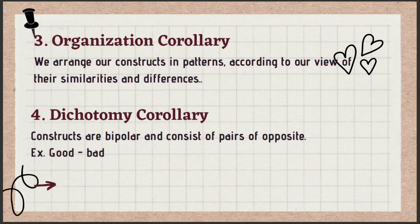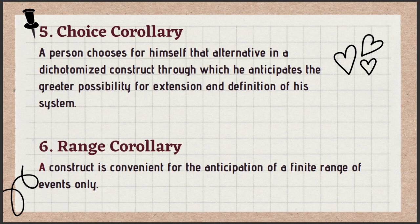The fourth corollary is the dichotomy corollary: personal constructs come in pairs — good/bad, popular/unpopular, intelligent/stupid — these are examples of dichotomous constructs. The fifth is the choice corollary: we choose the alternative for each construct that works best for us, the one that allows us to predict the outcome of anticipated events and extend our range of future choices.